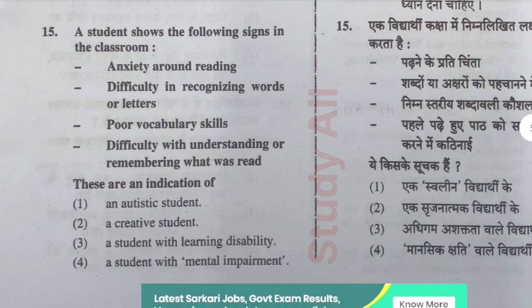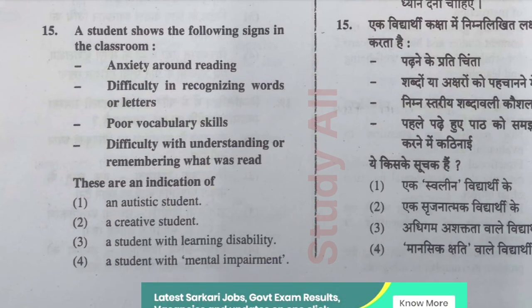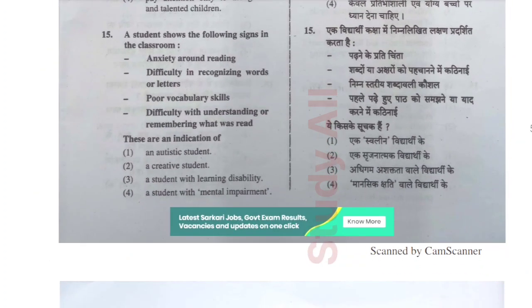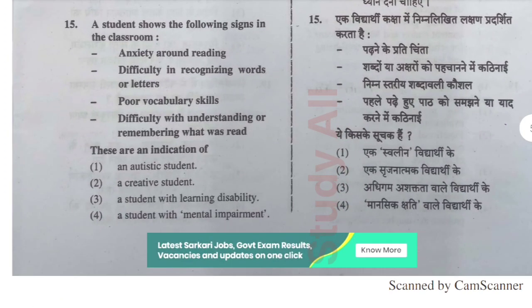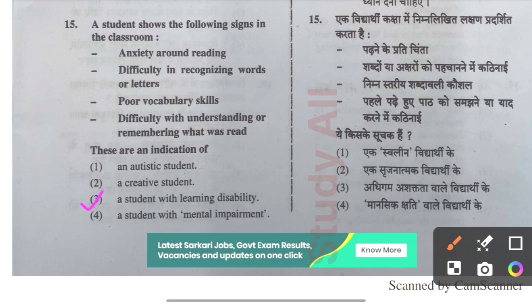Question number fifteen: A student shows the following signs in the classroom — anxiety around reading, difficulty in recognizing words, poor vocabulary skills, difficulty with understanding or remembering what was read. The correct option is option C: a student with a learning disability, as these are symptoms of a learning disability.